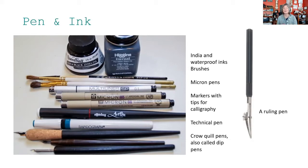With the ruling pen, you dip it into ink and a little bead of ink forms in the opening. Depending on how far you have the screw opened or closed, it changes the point width. As you draw, the bead of ink is pulled down onto the paper. It's really cool — if you ever see one of those around, give it a try.